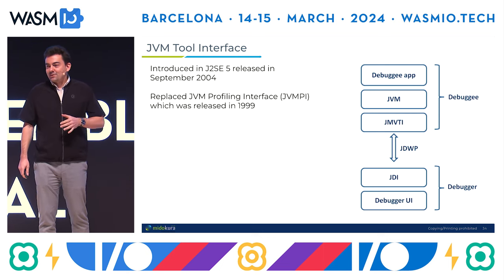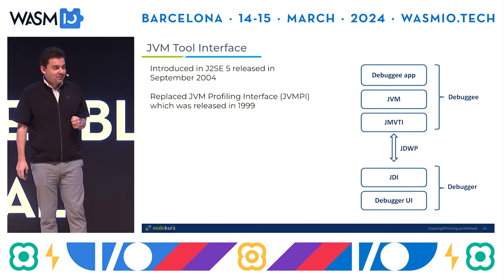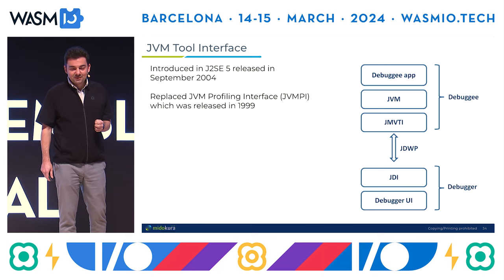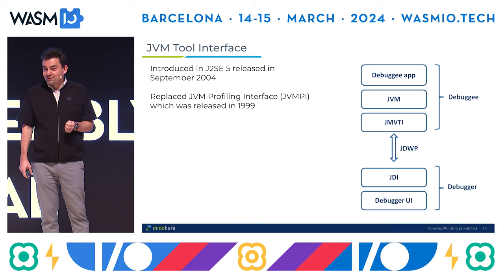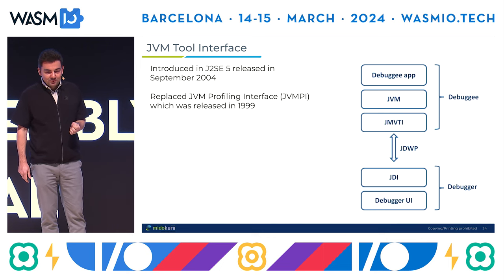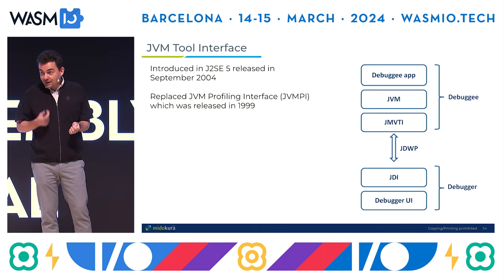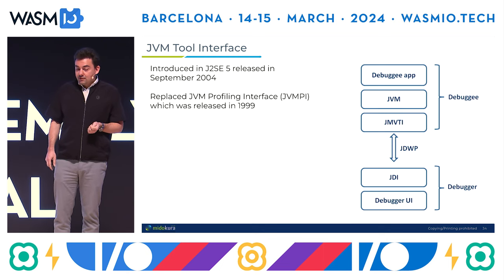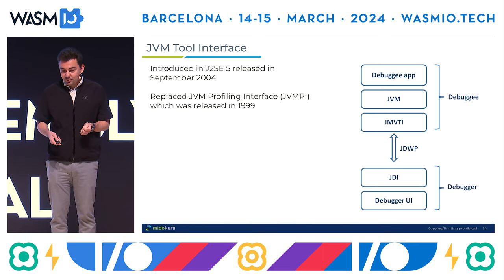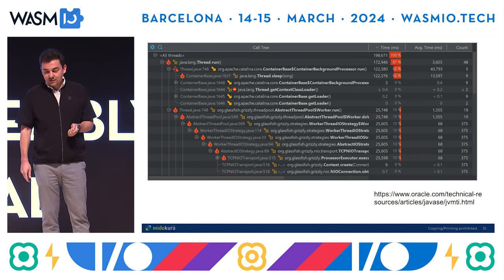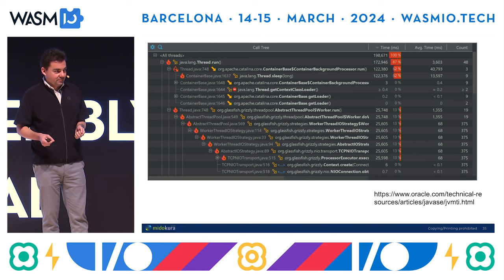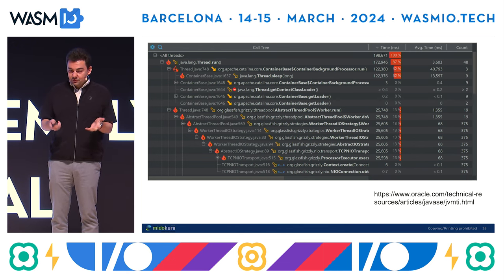Yesterday Chris Dickinson from Dylibso gave an awesome talk, and I thought I'd go into a little bit of history he didn't mention. I don't know if anybody remembers the JVM Tool Interface, which is from 2004. There was another thing before that, the JVM Profiling Interface from 1999. These things worked very well. This is actually a profiler using the JVM Tool Interface — this is 20 years old — and it was really good. I used this stuff.